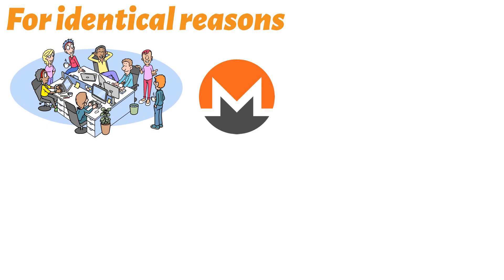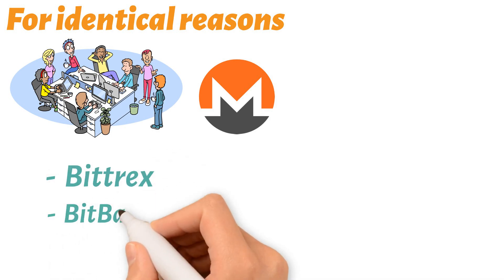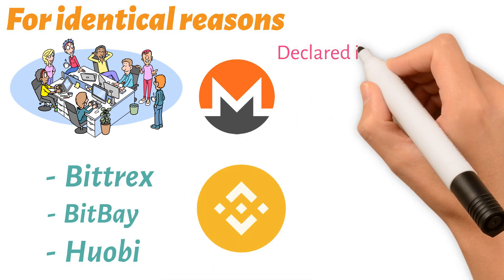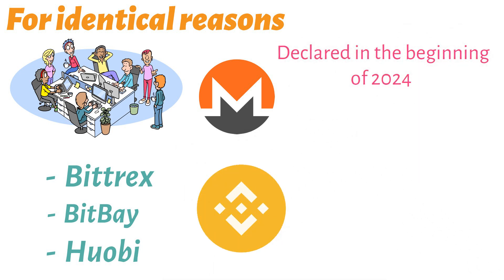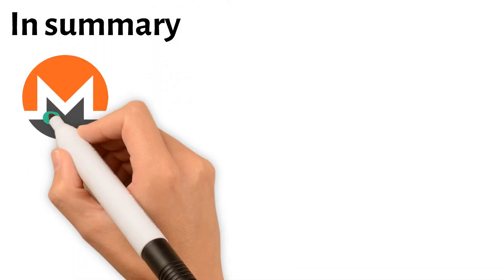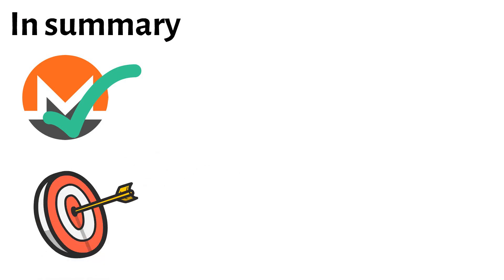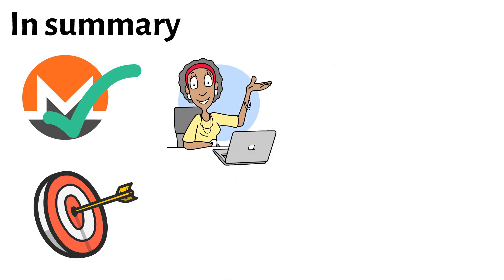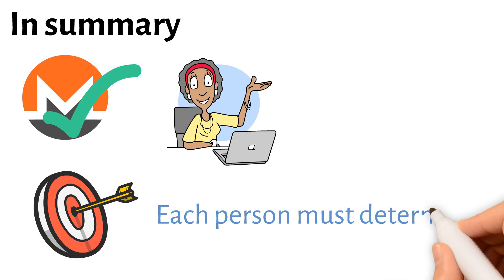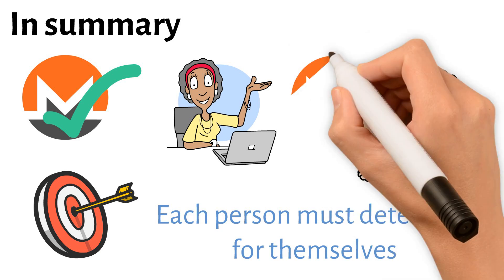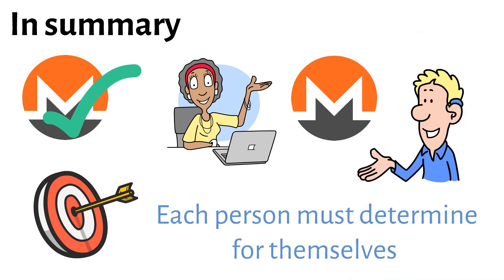These exchanges include Bittrex, BitBay, and Huobi. The biggest exchange in the world, Binance, declared in early 2024 that it was taking Monero off its platform. In summary, Monero is a unique project with unparalleled anonymity as a distinctive feature. This inexorably turns it into a target as well as an asset with enormous potential and continuous interest. Each person must determine for themselves whether they wish to use, own, and recognize the potential for future appreciation of the XMR token.